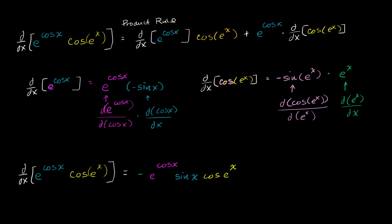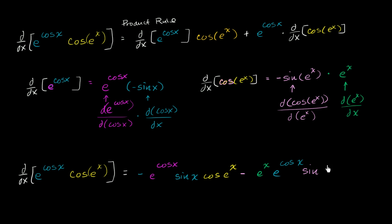...plus e to the cosine x times all of this stuff. Putting the negative out front, we have negative e to the x times e to the cosine x times sine of e to the x. You could simplify by combining the exponents since you're multiplying two things with the same base, but leaving it as is — and we're done.